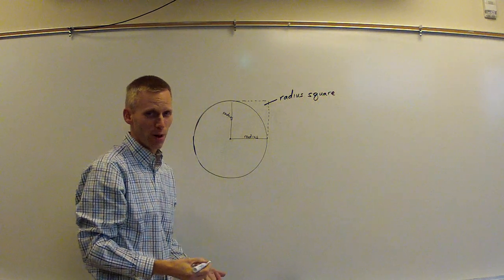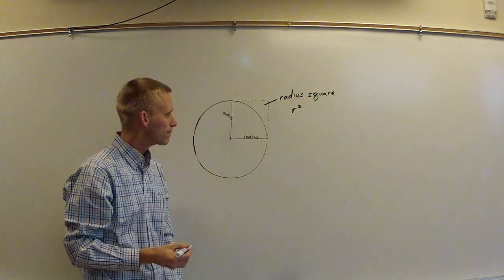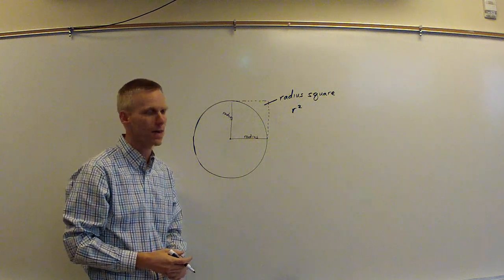Or a little bit more algebraically, we would call this r squared. Now you might look at the circle and think, how many of those radius squares could I fit inside of here?